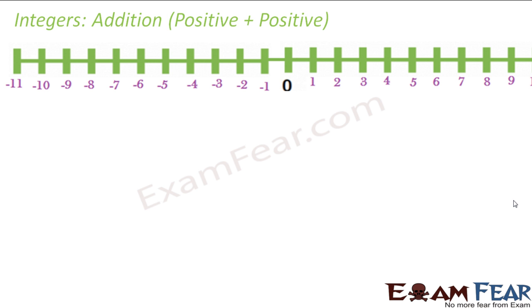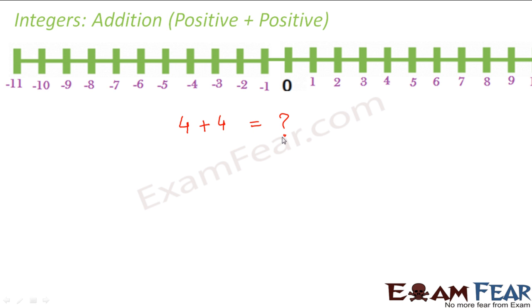The first example we will take is adding a positive integer with a positive integer. So let's say you have to add these two positive integers. We know that adding a positive integer to any number, we will move towards right.